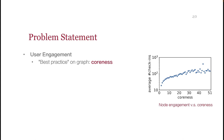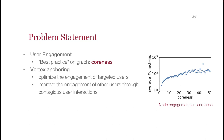According to existing studies, coreness is validated as the best practice for measuring user engagement on graph structure. As shown in the figure, there is a clear correlation between coreness and node engagement, represented by the average number of check-ins in the Gowalla dataset. Vertex anchoring is a common practice in recent studies to optimize the engagement of targeted users by providing incentives and improve the engagement of other users through contiguous user interactions.